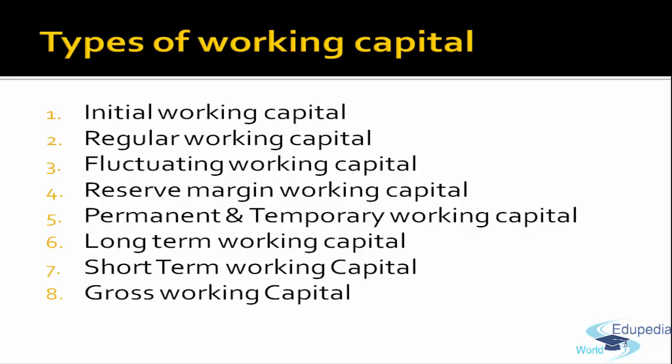Next is gross working capital. As the name suggests, gross means total — gross working capital is the total amount of investment in current assets. Net working capital is when you reduce the current liabilities of a firm from the current assets, so net working capital is the difference between current assets and current liabilities. This could be positive or negative: positive when current assets are more than current liabilities, which is favorable, and negative when current liabilities exceed current assets.